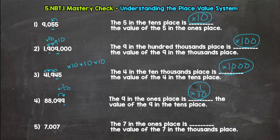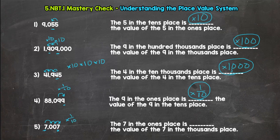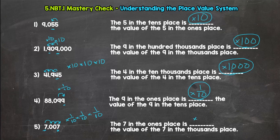Let's try number five. The seven in the ones place is blank the value of the seven in the thousands place. So we're going from thousands to ones place. So three jumps to the right. So one tenth times one tenth times one tenth, which is going to be one thousandth the value.